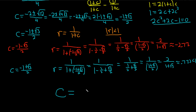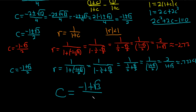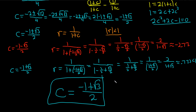So c is equal to (−1 + √3) / 2. That is the answer to this question — all that work! I hope this video has been helpful. Kind of an interesting problem. Good luck.